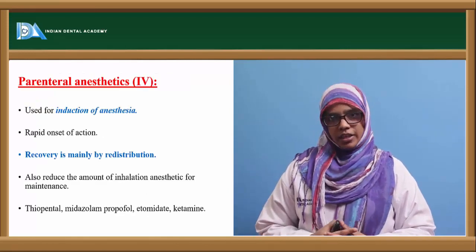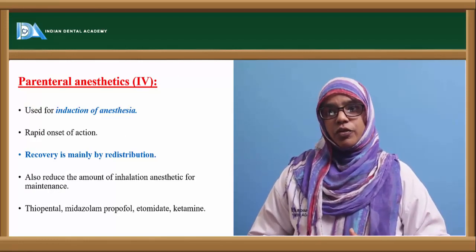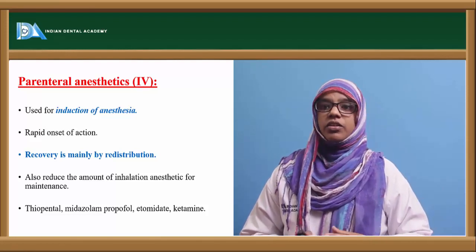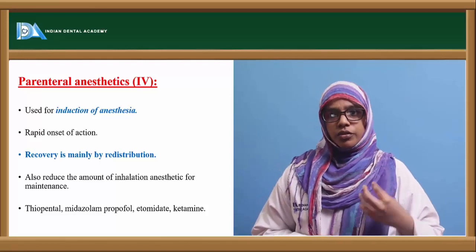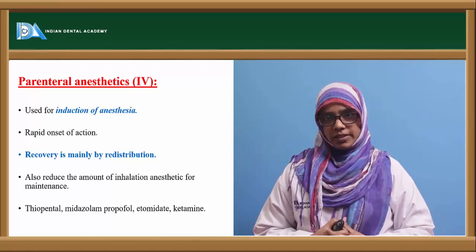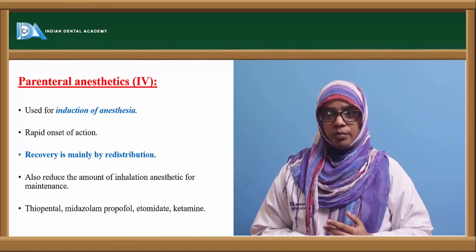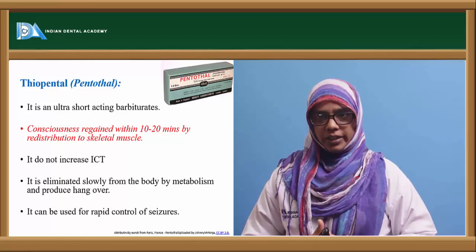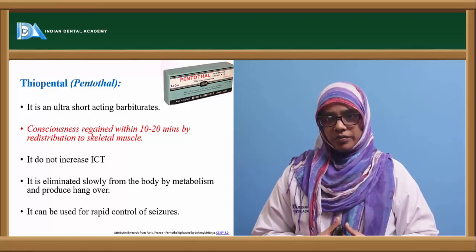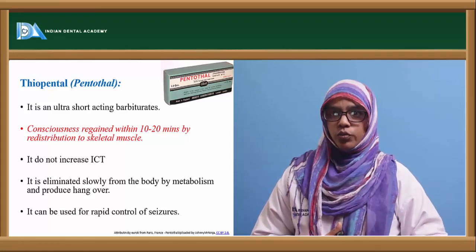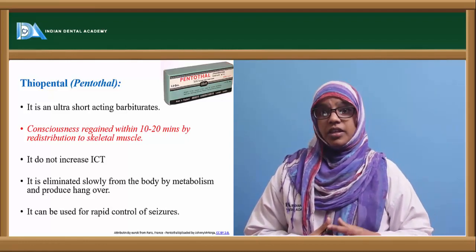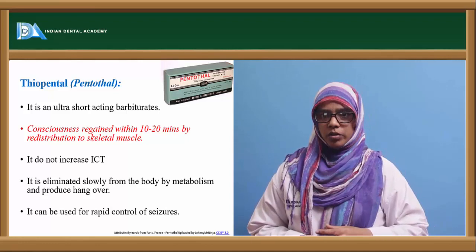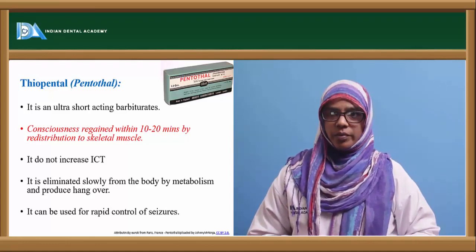Parenteral anesthetic agents are used for induction of anesthesia. They have a rapid onset of action since they are given intravenously, and recovery is mainly by redistribution. They also reduce the amount of inhalational anesthetic needed for maintenance. Examples include thiopental, midazolam, propofol, etomidate, and ketamine. Thiopental is an ultra-short-acting barbiturate; consciousness is regained within 10 to 20 minutes by redistribution to skeletal muscle. It does not increase intracranial tension, is eliminated slowly by metabolism, and can produce a hangover effect. It can also be used for rapid control of seizures.